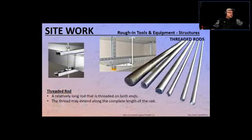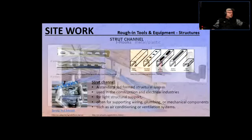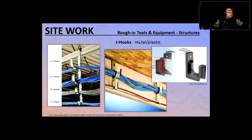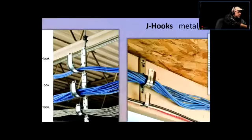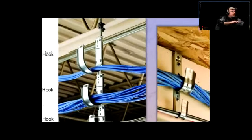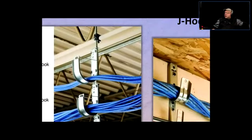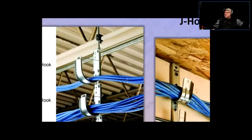That's the Unistrut or strut channel. We talked about threaded rods and the strut channel. Now, J-hooks can be mounted on threaded rods. I'm showing you different ways of mounting things because depending on the construction, you can use threaded rods and fasten them to steel beams, or there are different attachments and gadgets you can buy to properly mount things.